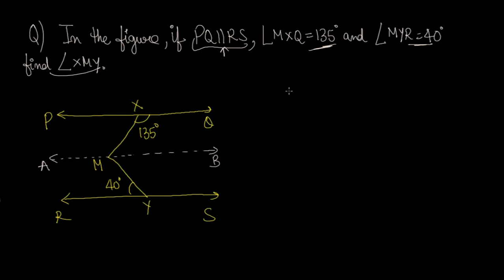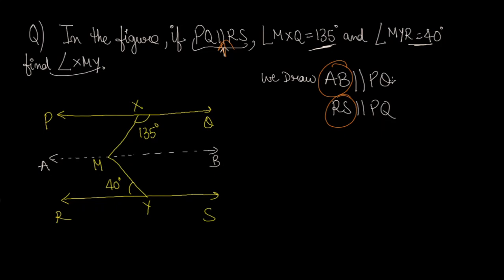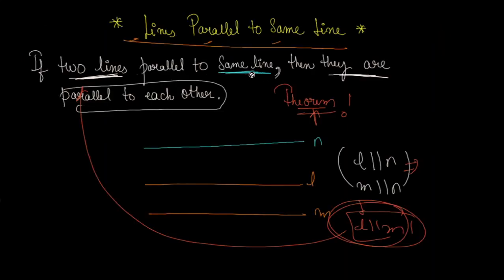We have made a line AB parallel to PQ. We will draw AB parallel to PQ, and also make it parallel to RS. AB is parallel to PQ, and RS is also parallel to PQ.